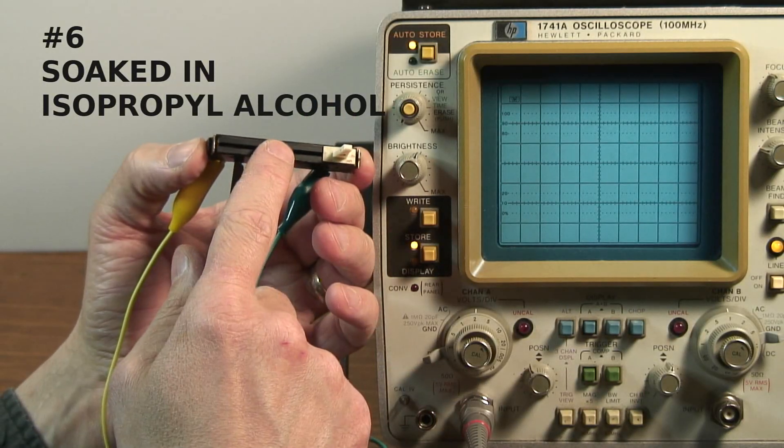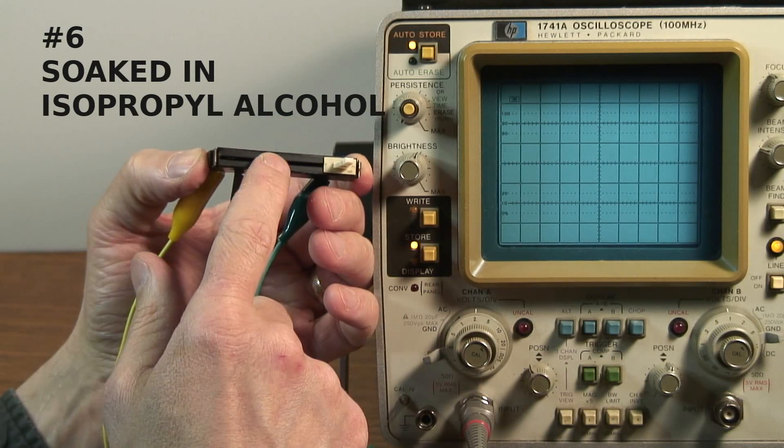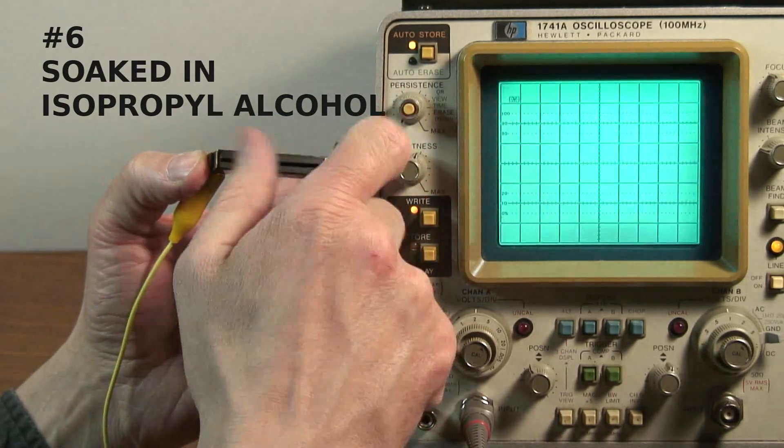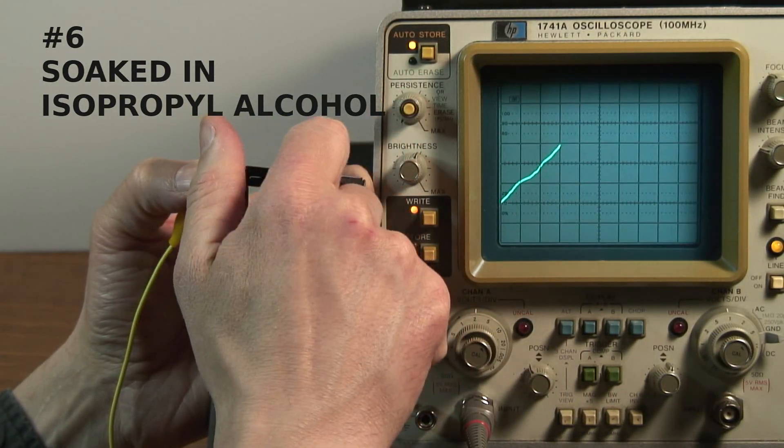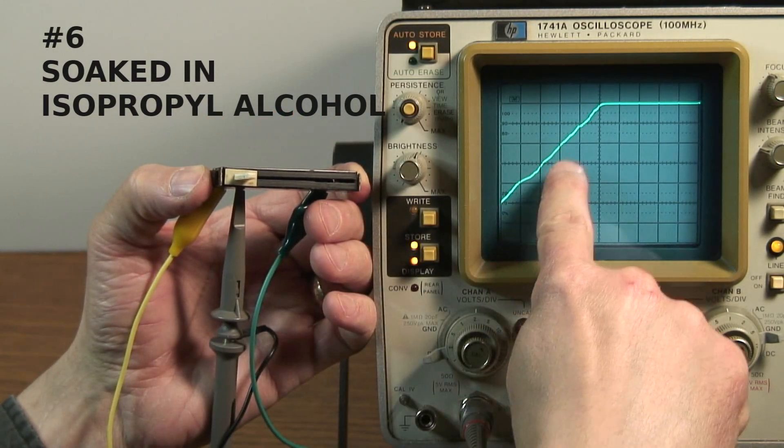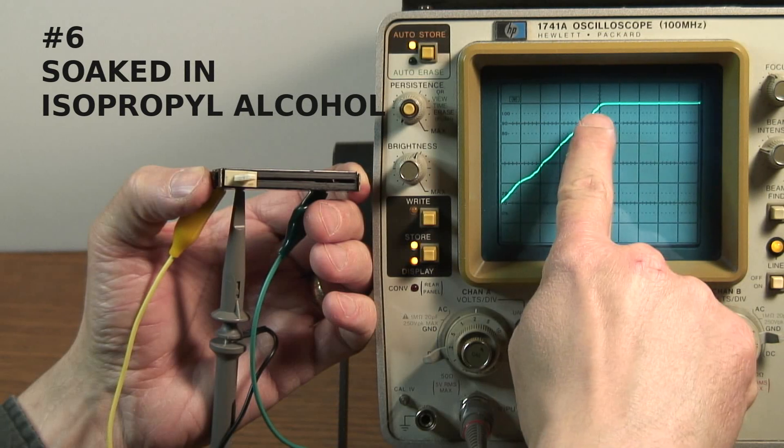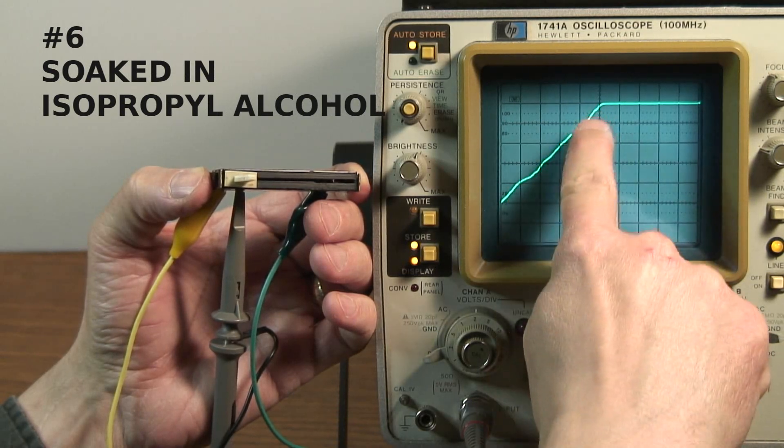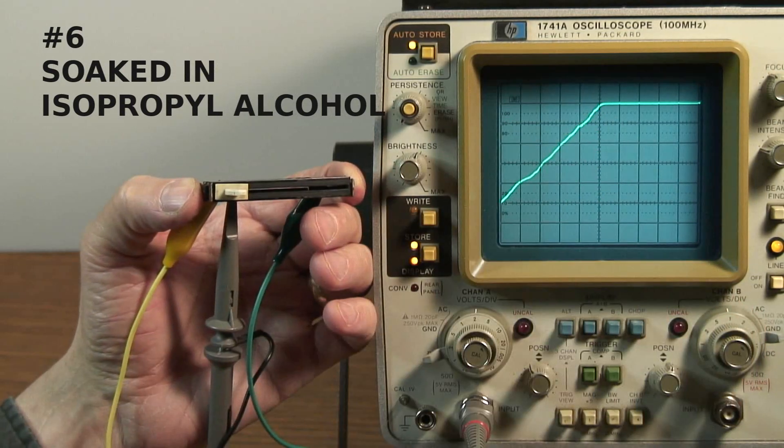And finally, fader number six. This is the one that was soaked in isopropyl alcohol, but was not blown out with the airline. You know, that's almost as good as the original one as well. There's just a tiny little bit of a discontinuity here, but it's pretty good.